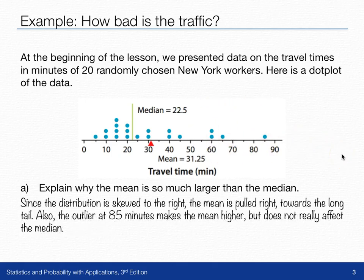Because the distribution is skewed to the right, the mean is pulled to the right towards the long tail. We can also see that there's a possible outlier here at 85 minutes, and that will have the effect on the mean to make it higher, because it will average in with all the other values. But it doesn't really affect the median all that much, because it's still the highest value, whether it's here, or here, or way out here.